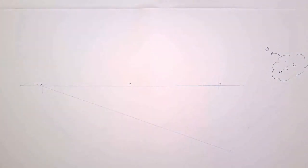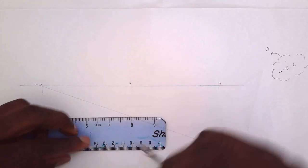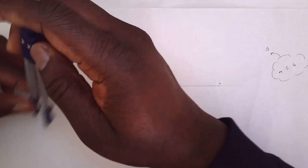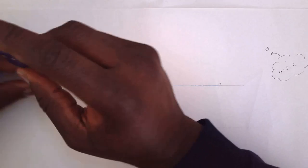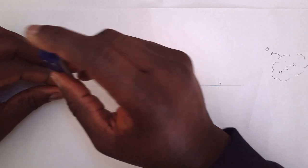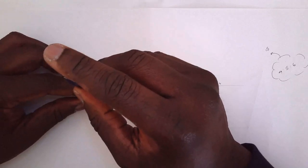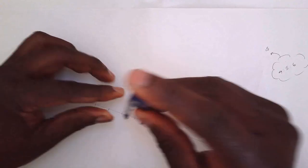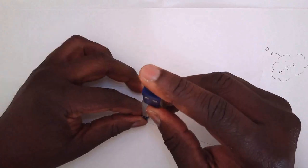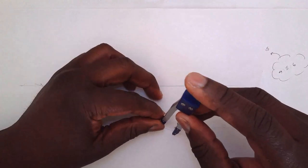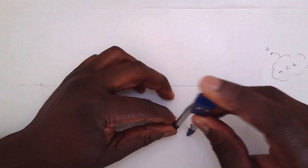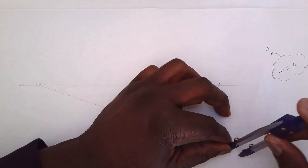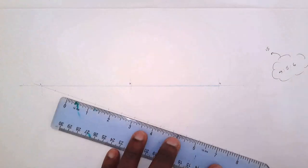I'm going to get a compass and open it to any reasonable distance — I'll make that 50 — so that everything stays within frame. Then I'm going to stand at one and cut, stand at two and cut for three, stand at three and cut for four, stand at four and cut for five, and so on, continuing until we get all 15 divisions.